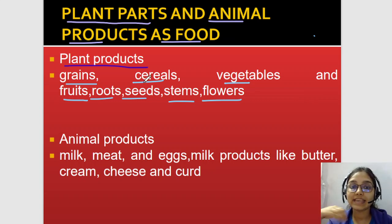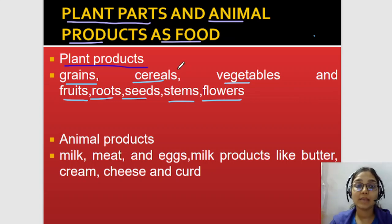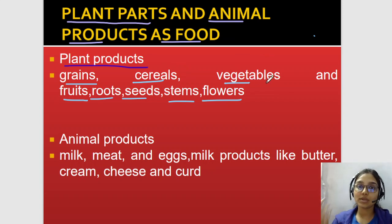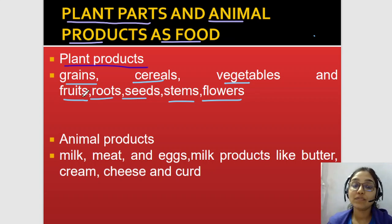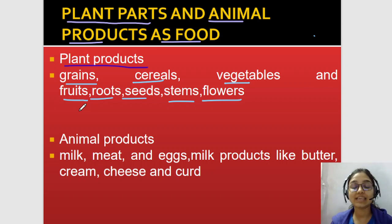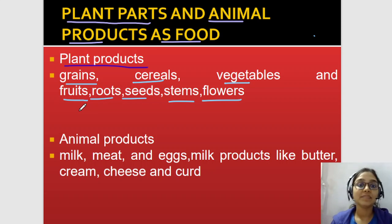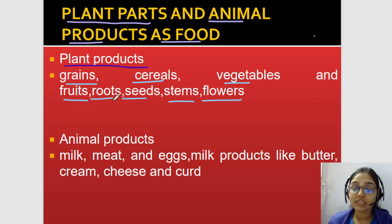So grain cereals include wheat, rye, and barley. Then vegetables — there are many vegetables: spinach, beetroot, tomatoes, carrots, potatoes — everyone's favourite, right? And fruits — lots and lots of fruits: oranges, kiwi, dragon fruit, apple, guava, and many more.